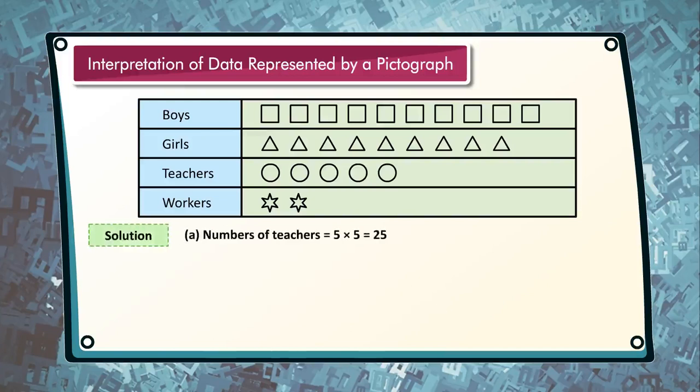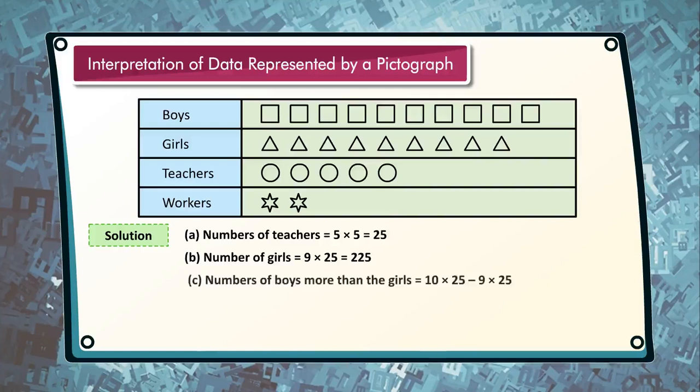Solution. Number of teachers equals 5 into 5 equals 25. Number of girls equals 9 into 25 equals 225. Number of boys more than the girls equals